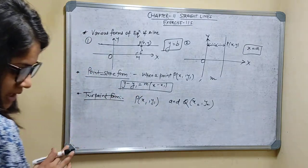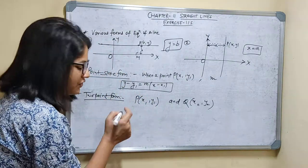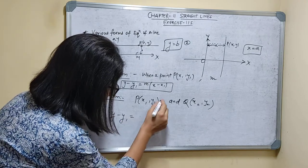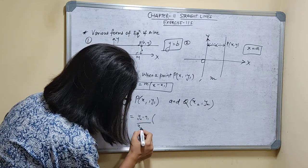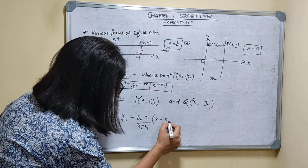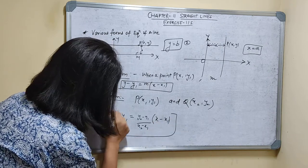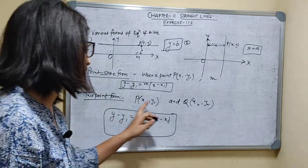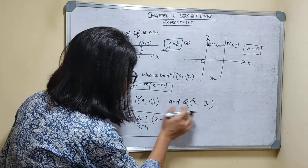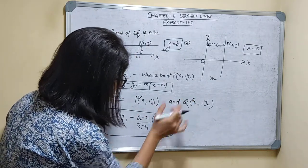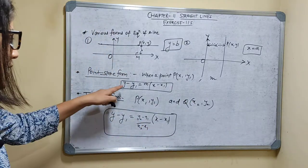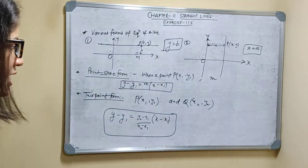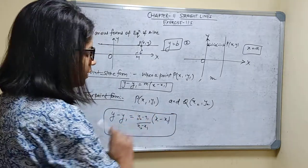Let's say the two points are P(x1, y1) and Q(x2, y2). This line can be any non-vertical line — it cannot be a vertical line, because at 90 degrees the slope cannot be defined. The formula is: y minus y1 is equal to (y2 minus y1) divided by (x2 minus x1), times (x minus x1). You find the slope from the two given points.